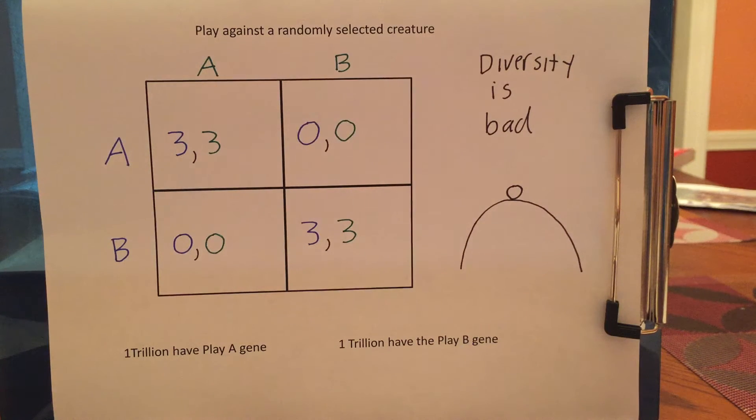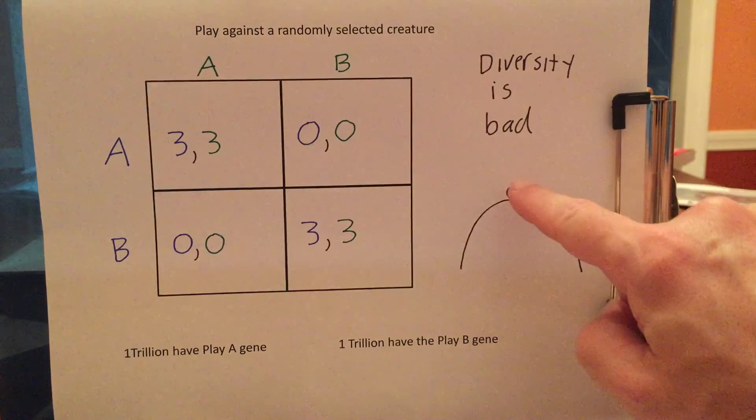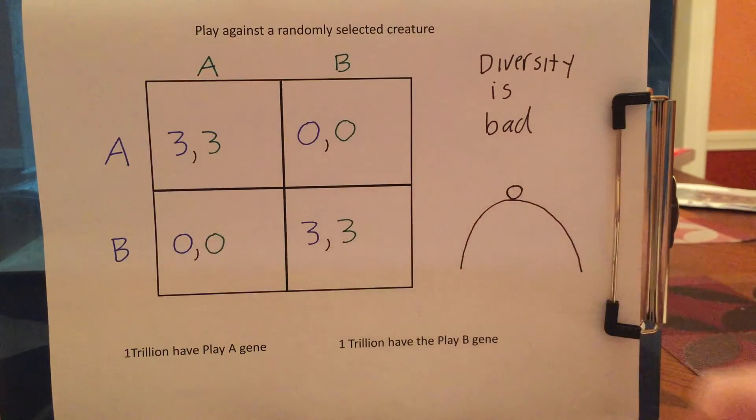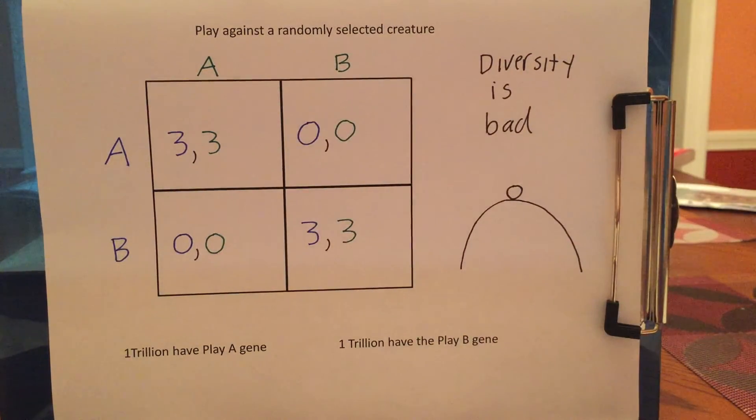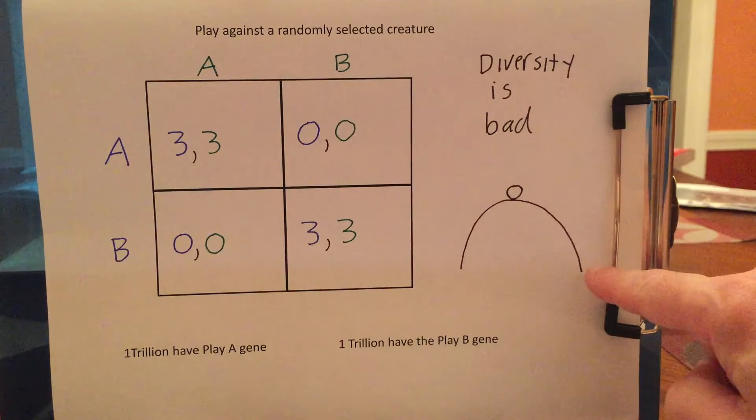As there are more A's in the next generation, the advantage to being an A keeps going up and up and up. As the number of A's goes up, the advantage to being an A goes up. And eventually, pretty much everyone will be an A except for a few mutants. So the ball will roll all the way down the edge. Similarly, if we started out equal but there were a few more B's that were born than A's in the next generation, the advantage of being a B would be higher than an A. You'd expect in the generation after that, there'd be even more B's and more B's, until everyone was a B.